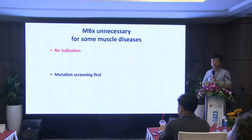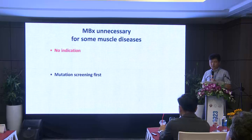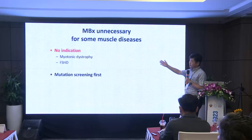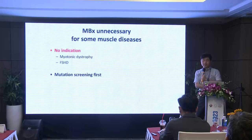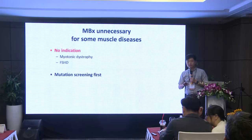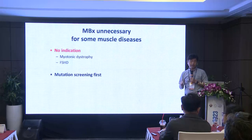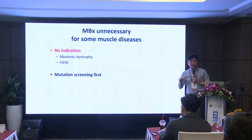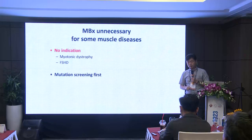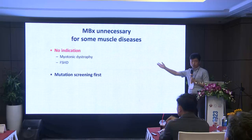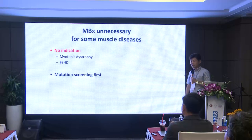Even among muscle diseases, for some conditions there are not strong indications. The most representative ones are myotonic dystrophy and FSHD — facioscapulohumeral muscular dystrophy. In myotonic dystrophy, if you do muscle pathology, you can see a variety of changes, but none of them is actually diagnostic. In contrast, if you do EMG you can detect myotonic discharge, and clinical pictures are very characteristic. So you can make a clinical diagnosis, do EMG and genetic testing — you don't need muscle pathology.